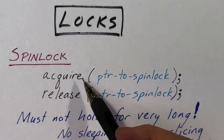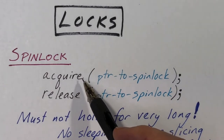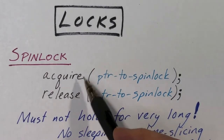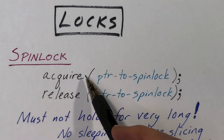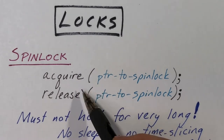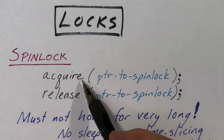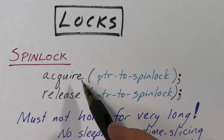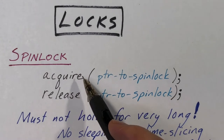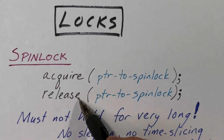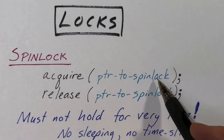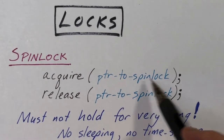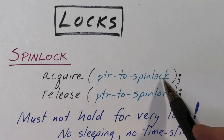With any locking system, there are two primary functions: acquire and release. Sometimes these are called lock and unlock. But for spin locks, the functions are called acquire and release, and they're each passed a pointer to a structure representing the spin lock.